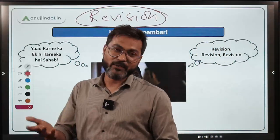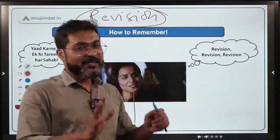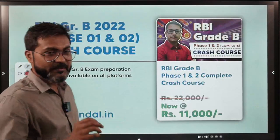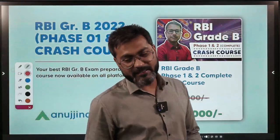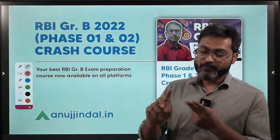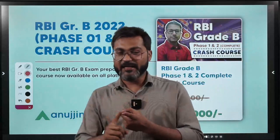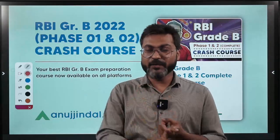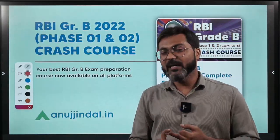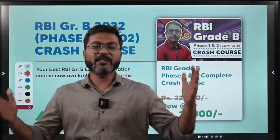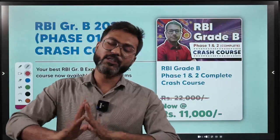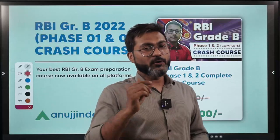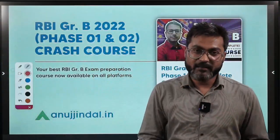So guys, that was the session. To summarize what I wanted to tell you: first, identify the elements of a scheme — objective, launcher, ministry, targets, nodal agency, key features. Second, divide the scheme into two parts — effortless learning and things to remember. And finally, revision, revision, and revision. Keep revising and things will definitely be remembered. Also keep attending our government scheme sessions for extra boost.